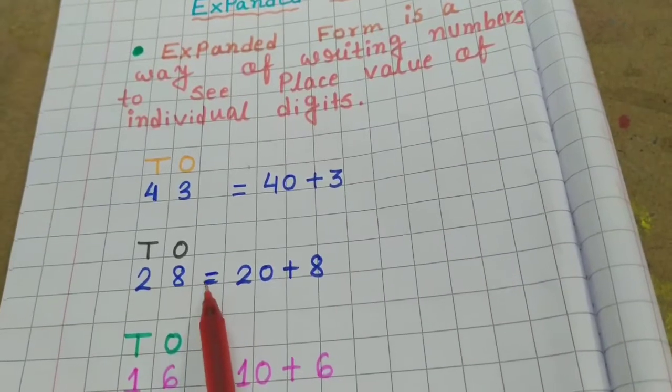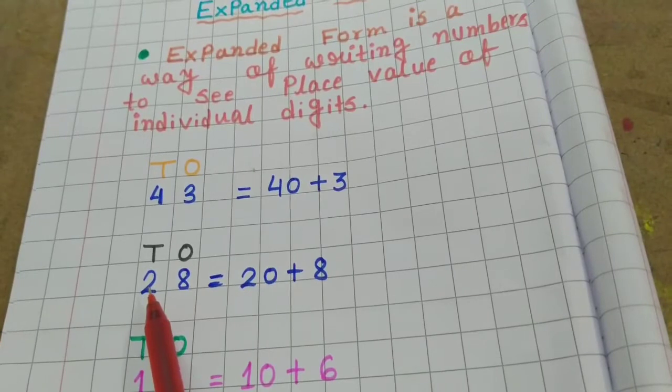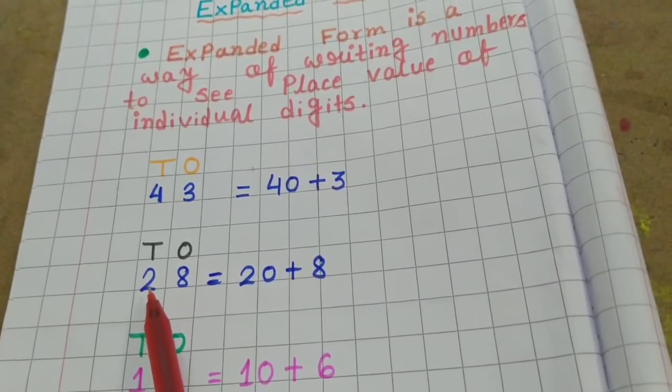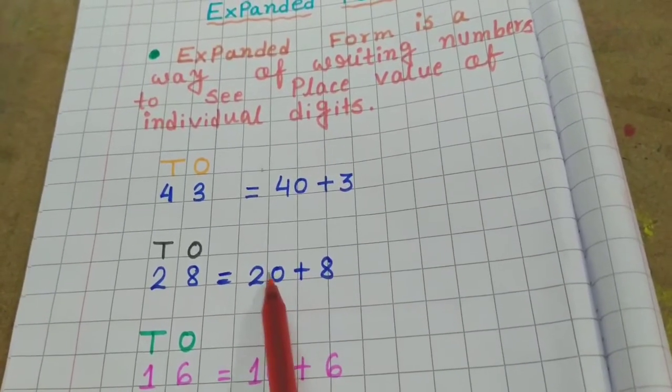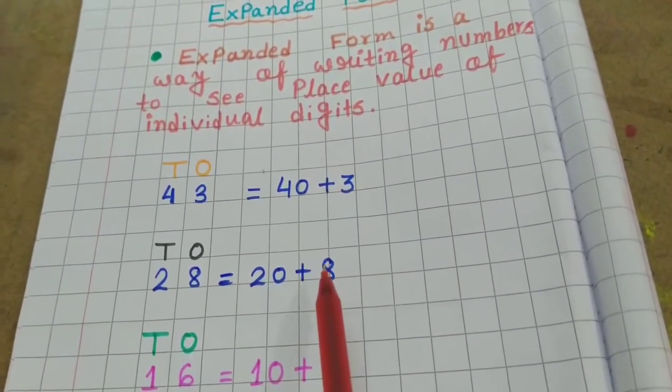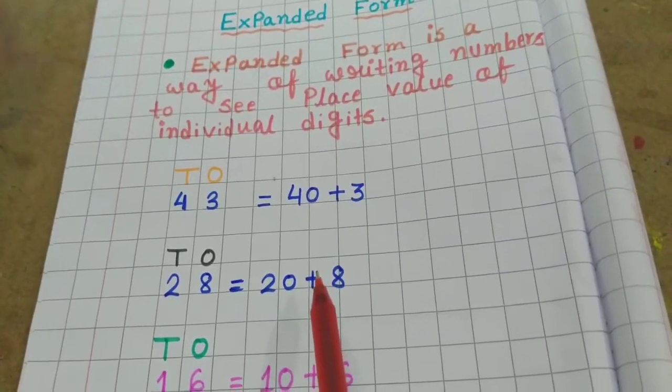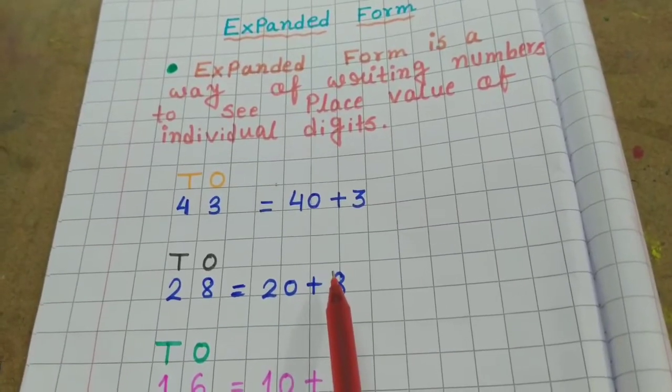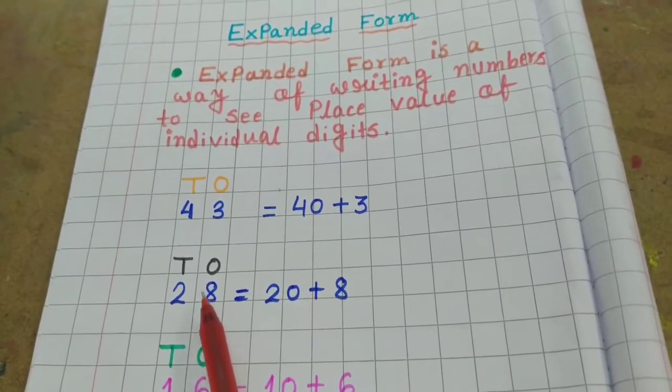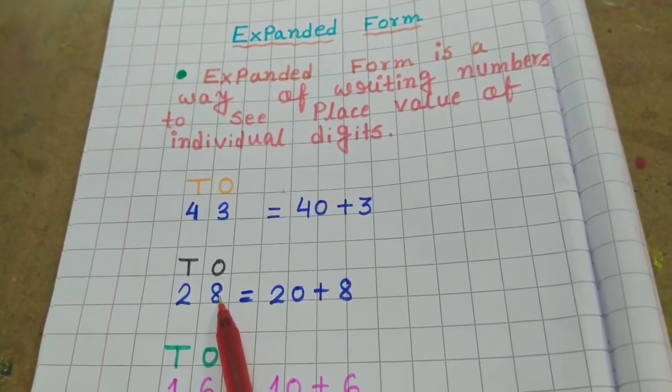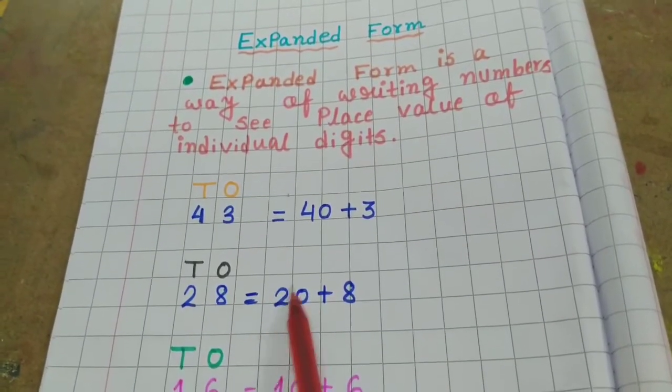8 is in 1s place and 2 is in 10s place. So, 2 tens means 20 and 8 ones means 8. You should remember always that the number of 1s place will be 1 digit and the number of 10s place will be 2 digits.